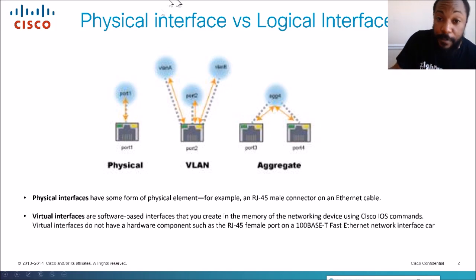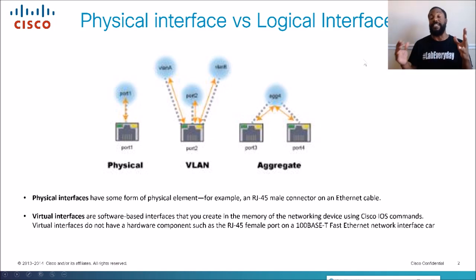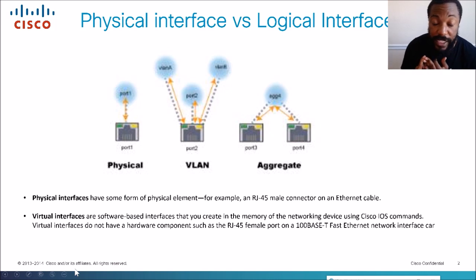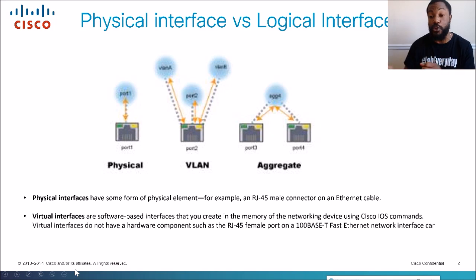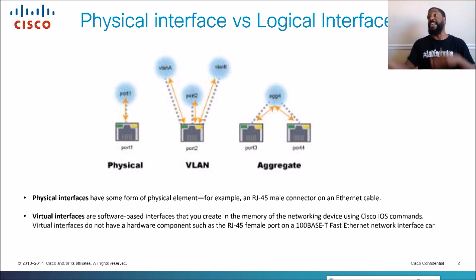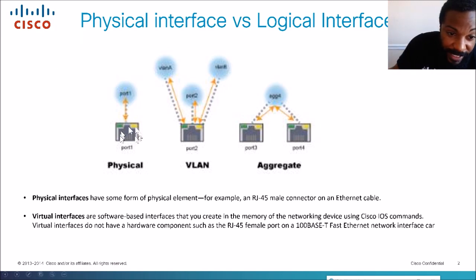We need to know the differences as we talk about wireless local area networks and wireless controllers, because wireless controllers have many logical interfaces. A logical interface is basically one that you can't touch — loopbacks, sub-interfaces, BVIs, switched virtual interfaces (SVIs) — these are considered logical interfaces. You can't touch them but you can assign an IP address to them, just like a physical interface.